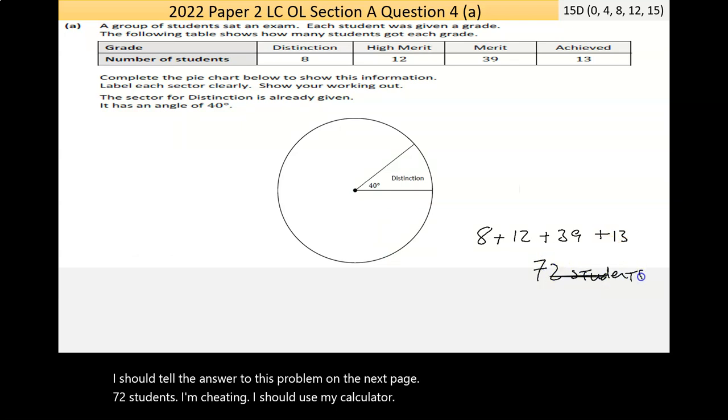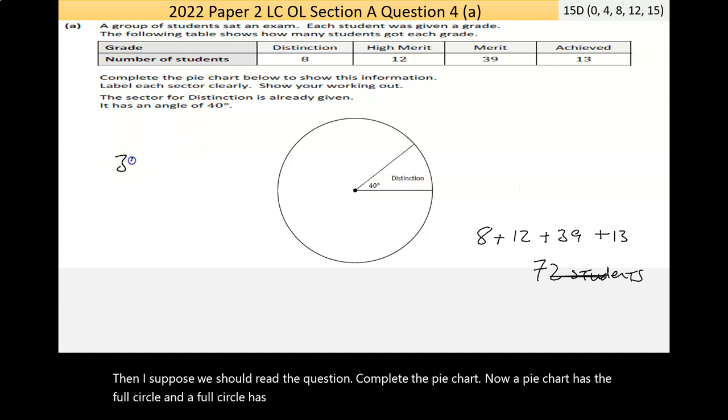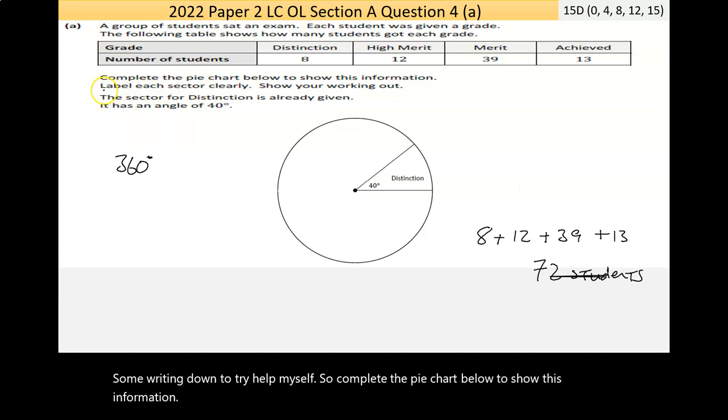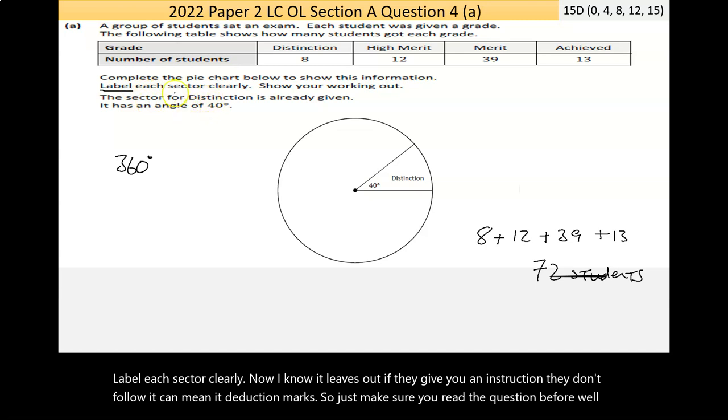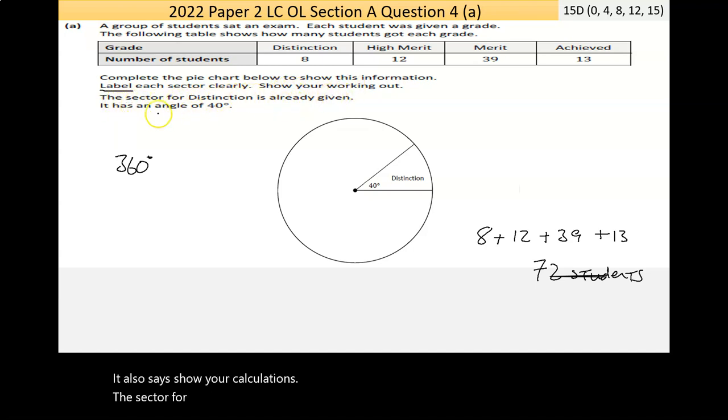The question says complete the pie chart. A pie chart has a full circle, and a full circle has 360 degrees. Complete the pie chart below to show this information and label each sector clearly. If they give you an instruction with Leaving Certificate and you don't follow it, it can mean a deduction in marks. Also says show your calculations. The sector for distinction is already given with an angle of 40.